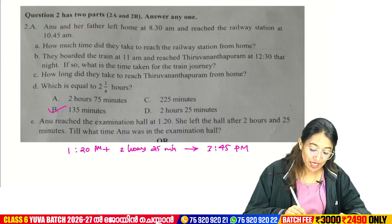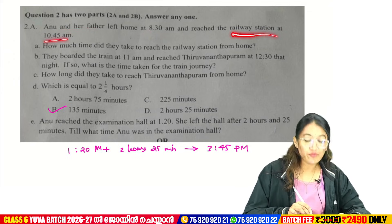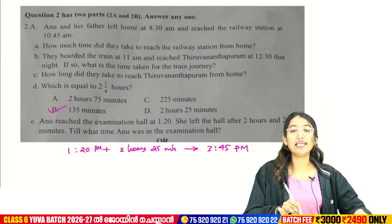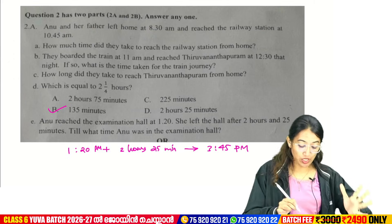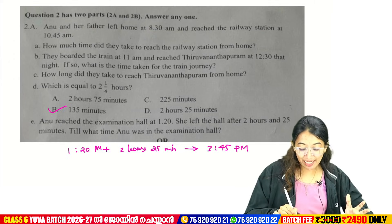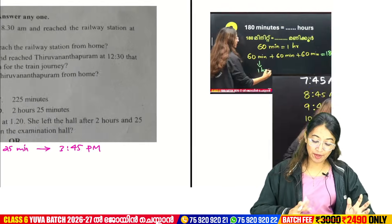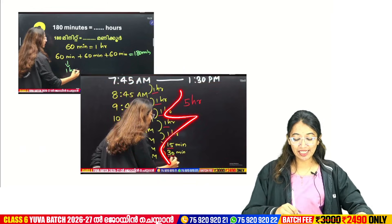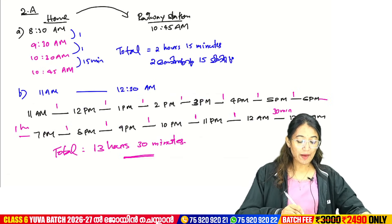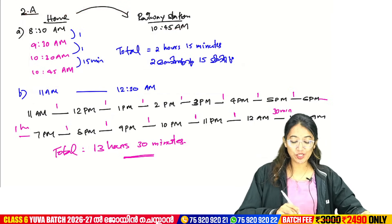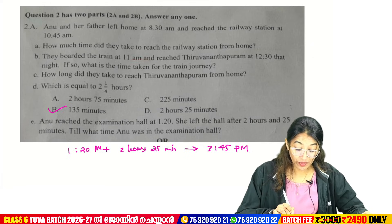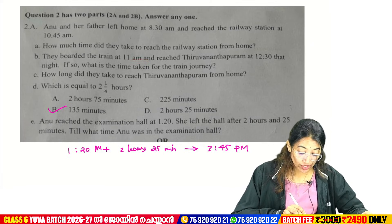Anu and her father left home at 8:30am and reached the railway station at 10:45. How much time did they take to reach the railway station from home? They boarded the train at 11am and reached at 12:30am at night. What is the time taken for the train journey?